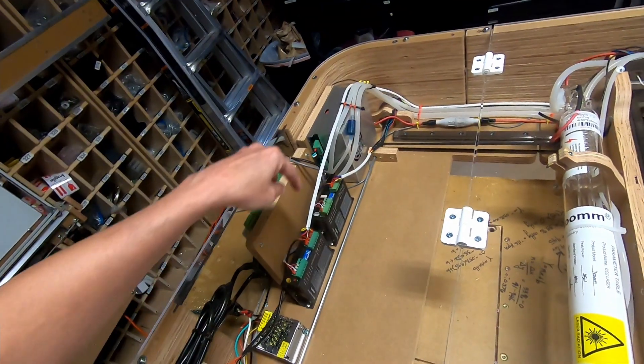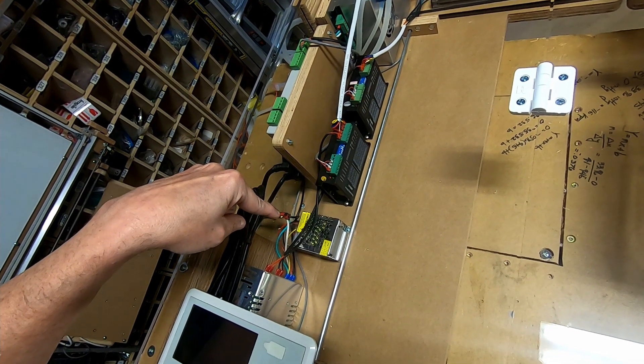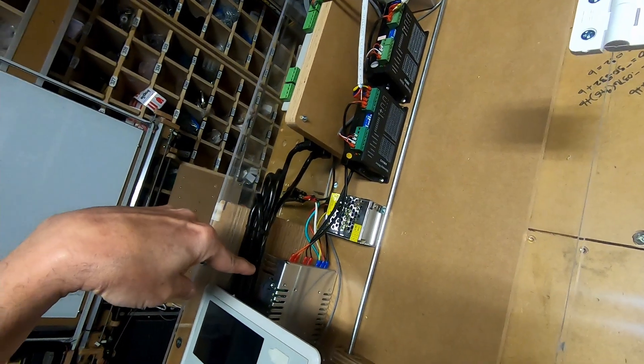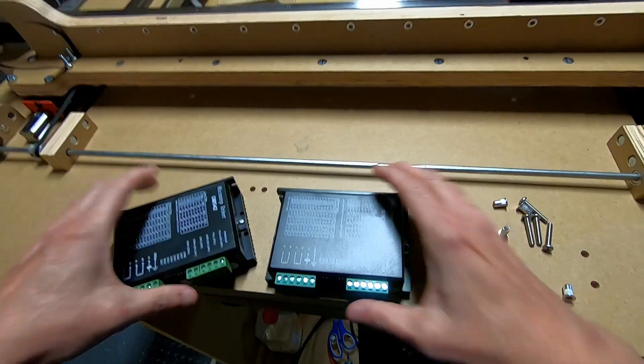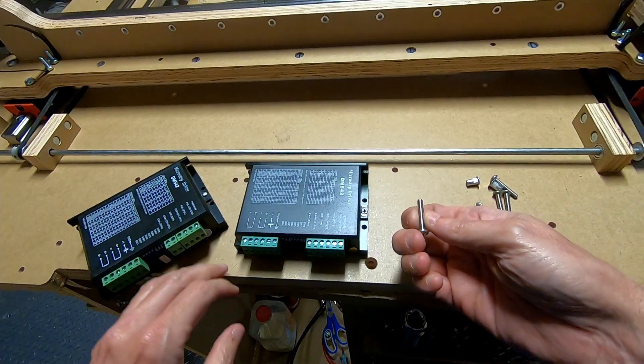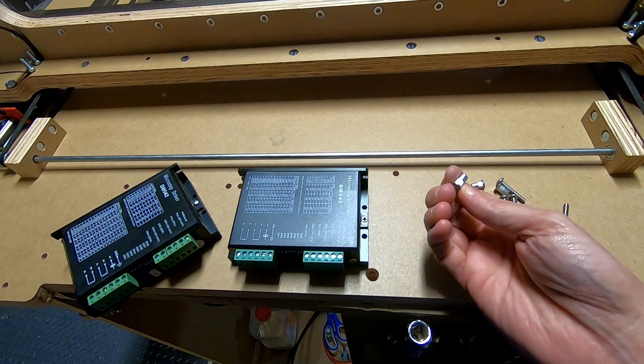In this step, the two drivers will be installed. The 24-volt power supply will be installed, and the 36-volt power supply will be installed onto the base of the machine. You'll need two of these drivers, four number eight one-inch screws, and four nut inserts or rivet nuts.